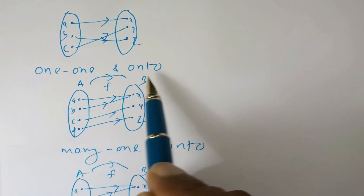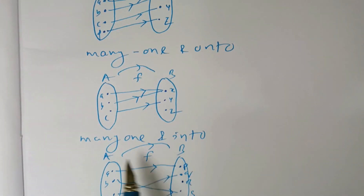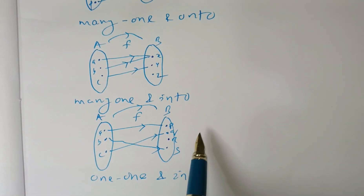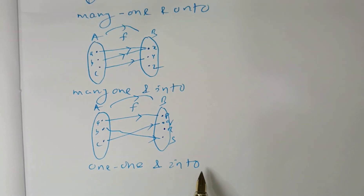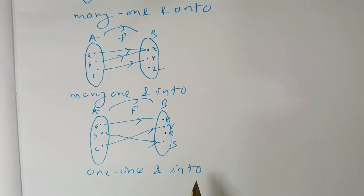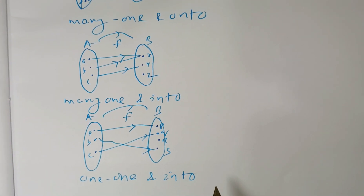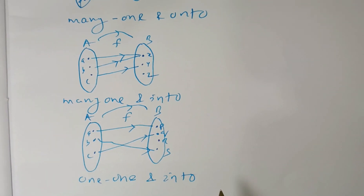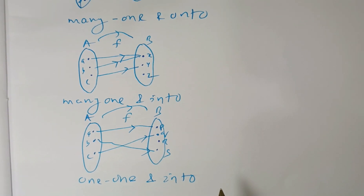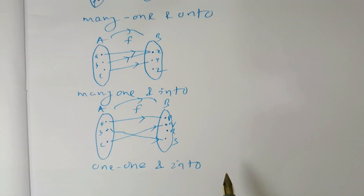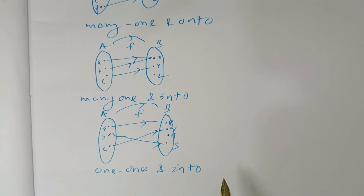So we saw the four types of functions: the first one is one-one and onto, the second one is many-one and onto, the third one is many-one and into, and the fourth one is one-one and into. We should study and clarify these four function types in our minds to continue with the study of countability of sets. Thank you for watching this video; in our next video we shall continue the study of countability of sets.